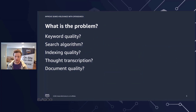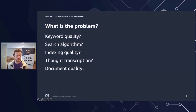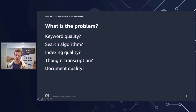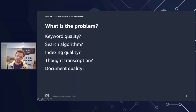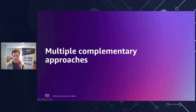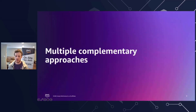So what could be impacting the match between a user's input and our search engine results? It could be keyword quality, search algorithms, indexing quality, thought transcription, or even document quality itself. Search relevance really is a question of how can you reduce the time spent looking for something while improving the returned matches. Fortunately, there are multiple approaches to improve overall relevance.